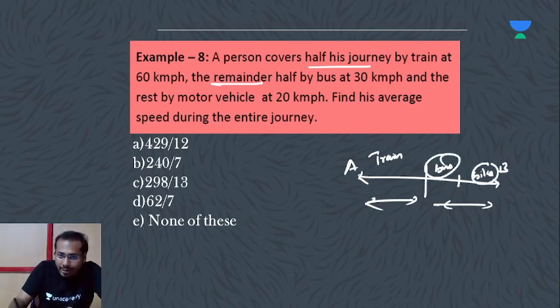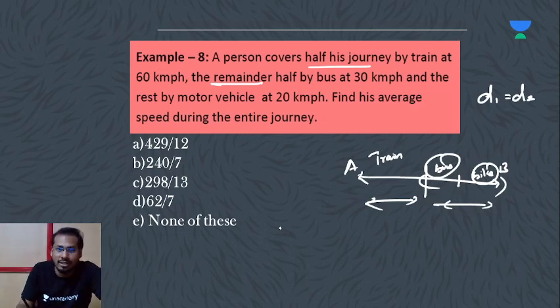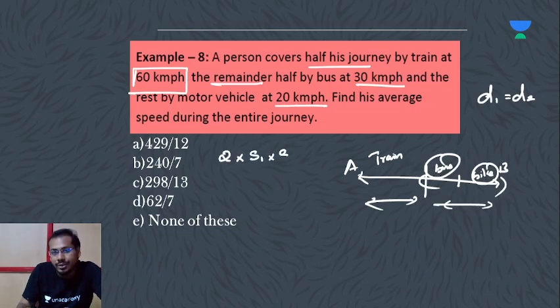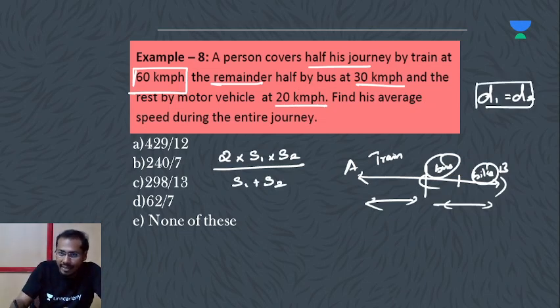Bus and bike, let's look at the second half. When distance is constant, D1 equals D2. For the second half, one is 30 km per hour, another is 20 km per hour. The formula for average speed when distance is constant is: 2 times S1 times S2 divided by S1 plus S2.